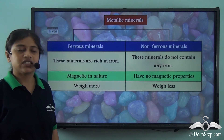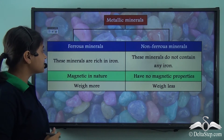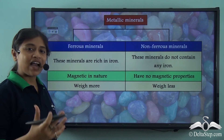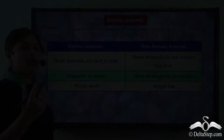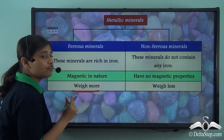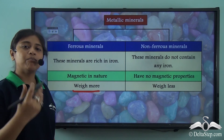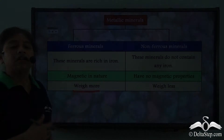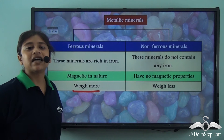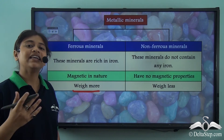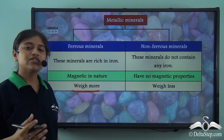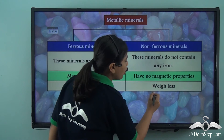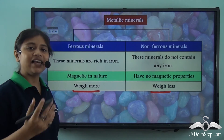The third point of difference is that ferrous metallic minerals weigh more due to the presence of iron, which is a heavy metal. Non-ferrous metallic minerals do not have any iron, so due to the absence of that heavy metal, these are generally low in weight — they weigh less.